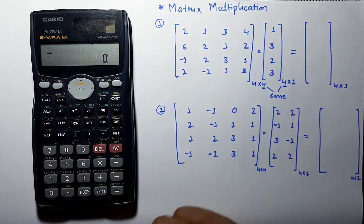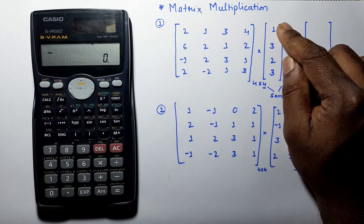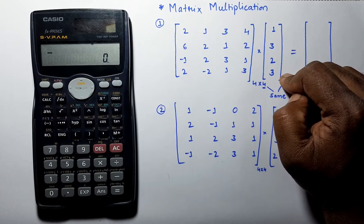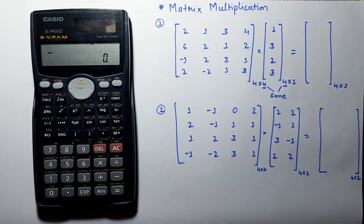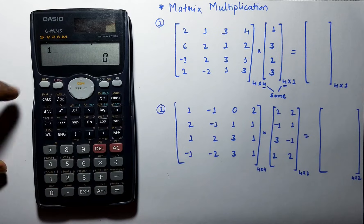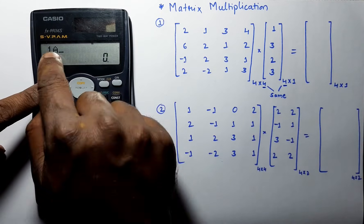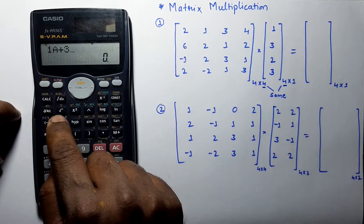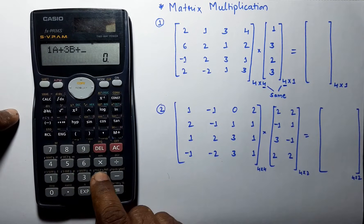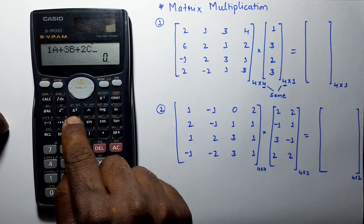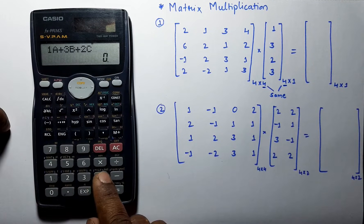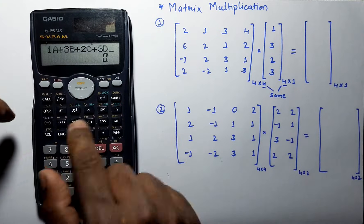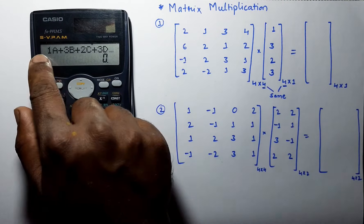Now we will formulate the 4x4 multiplication into equations. We use the column matrix and formulate it using variables. It is like 1 times a, plus 3 times variable b, plus 2 times c, plus 3 times d.